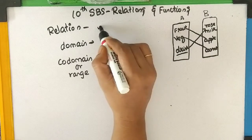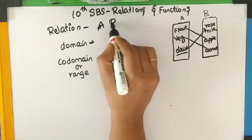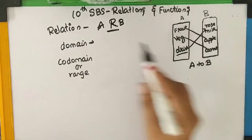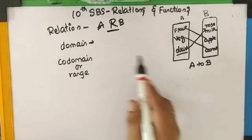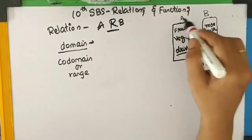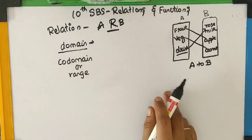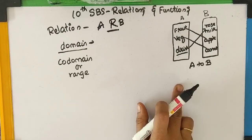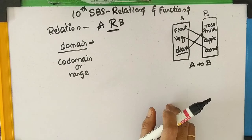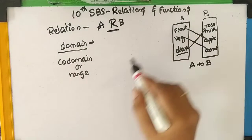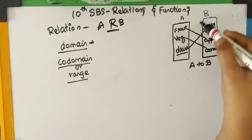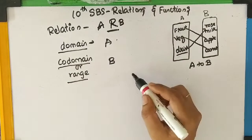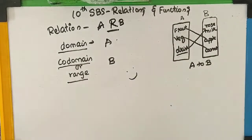What is a relation? In a relation, set A is related to set B — that is, it has a relation with set B. What is domain? In these two sets A and B, A is the domain — that is, the first set is the domain. If it's A to B, A is domain; if it's B to A, then B is domain. What is co-domain? If the relation is from A to B, then B is co-domain or range. If the relation is from B to A, then A is the co-domain.